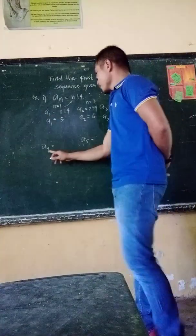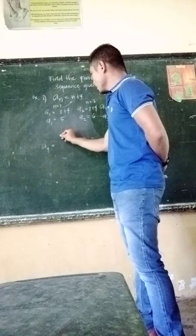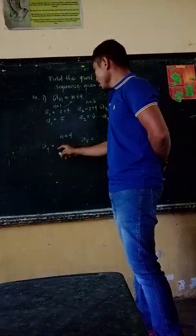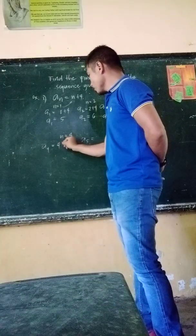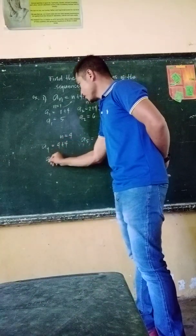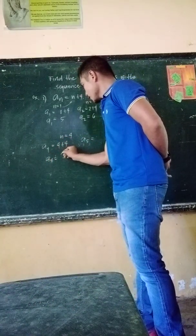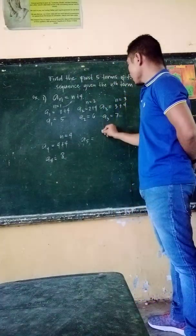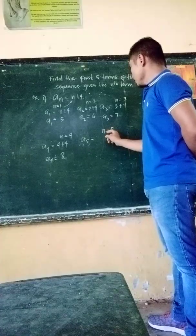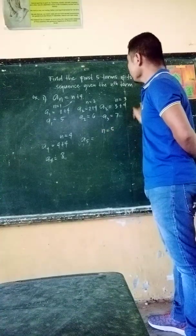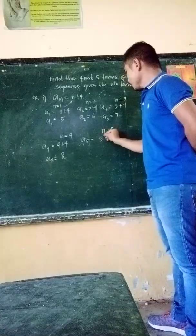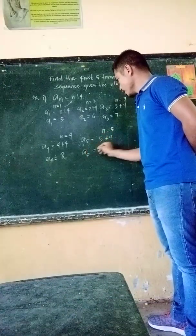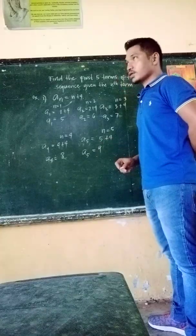Next, we have a sub 4. Let n equal 4, then replace n by 4. This will become 4 plus 4, and a sub 4 is 8. For the fifth term, let n equal 5, then replace n by 5. So 5 plus 4, and a sub 5 is 9.